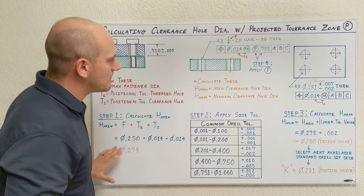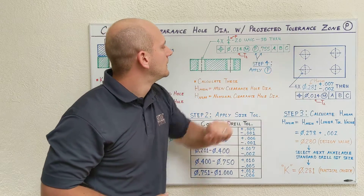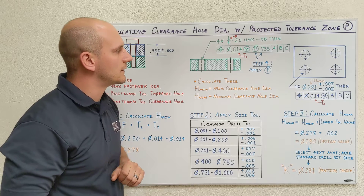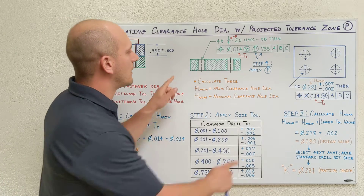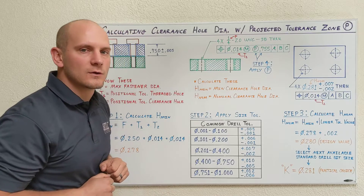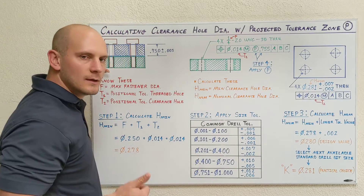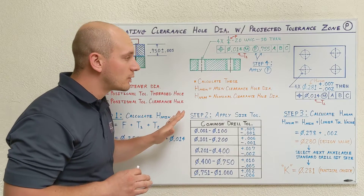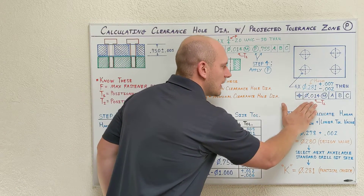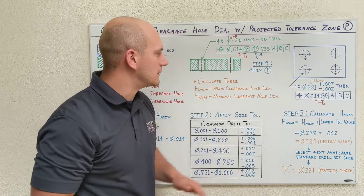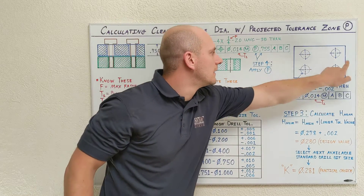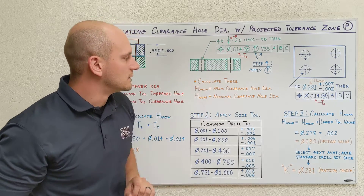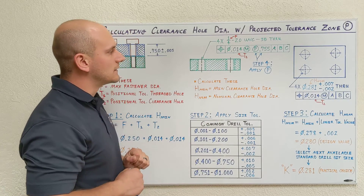This is a method you can follow so that when calculating your clearance hole diameters with projected tolerance zone, you know with 100% certainty that if these parts are machined to worst case, they will still assemble, fit, and function properly without any interference. One quick note: you do not apply projected tolerance zone to your positional tolerance controlling your clearance holes — only the one controlling your threaded features.